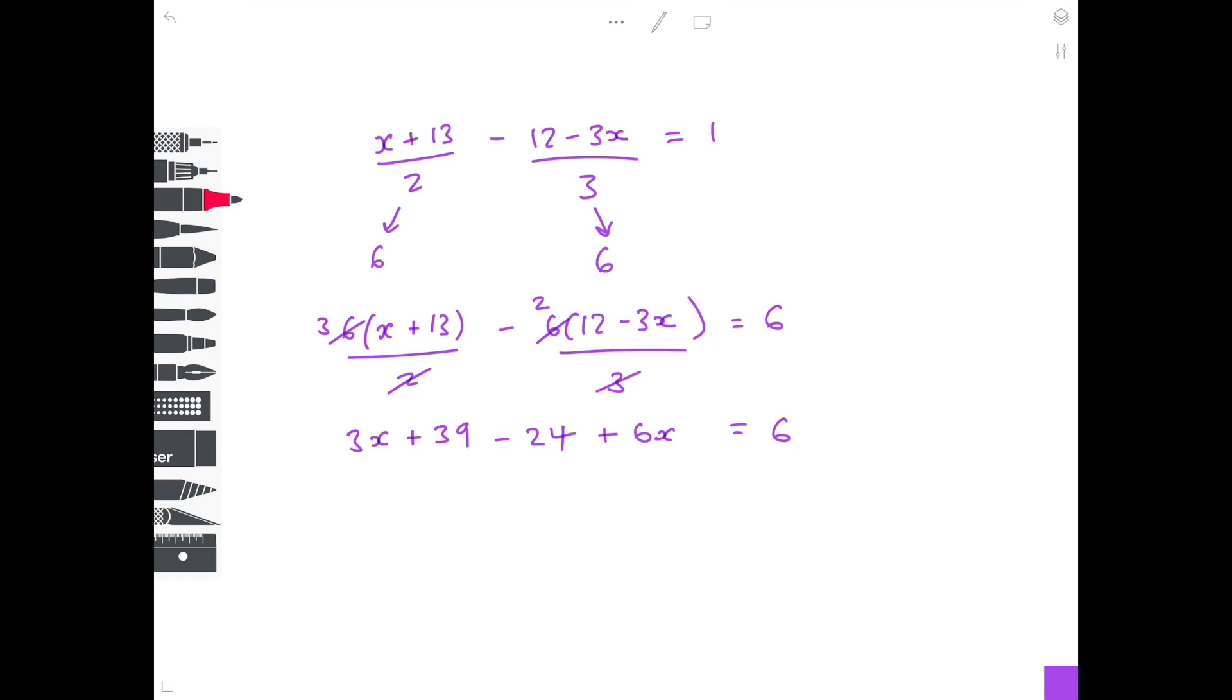Collect together your x terms on the left-hand side. So 3x plus 6x is 9x. 39 minus 24 is 15. That equals 6. To get 9x by itself, you want to take away 15 from both sides. And lastly, divide by 9 to get x by itself. So minus 9 divided by 9 equals minus 1.